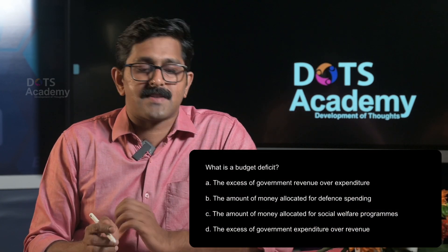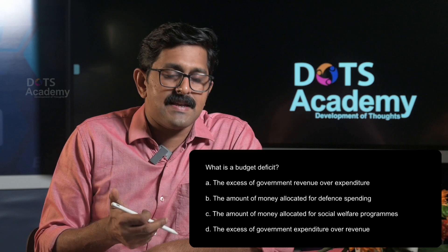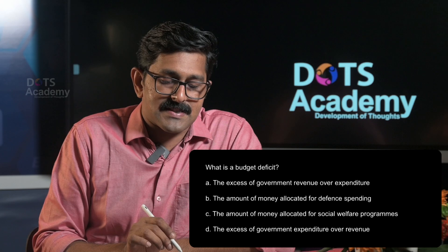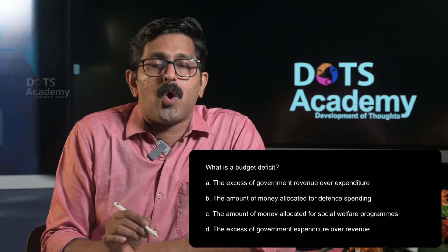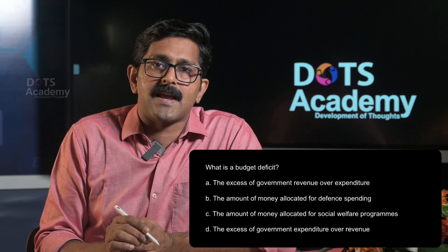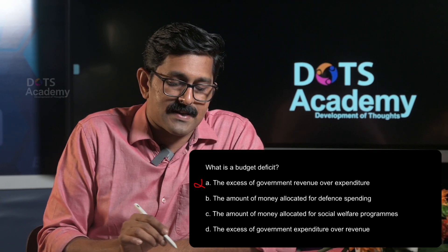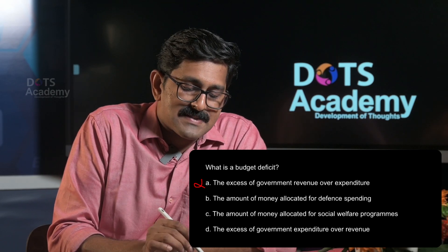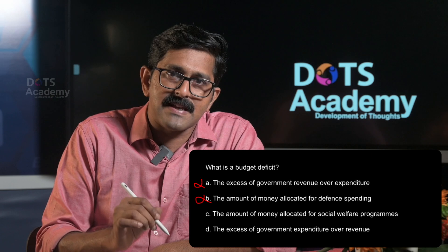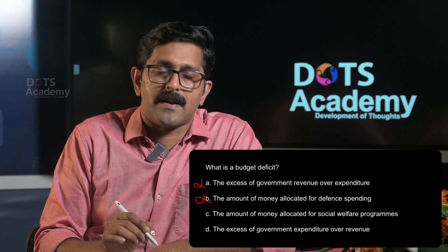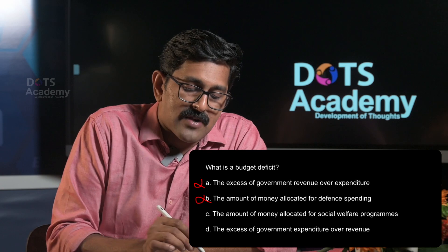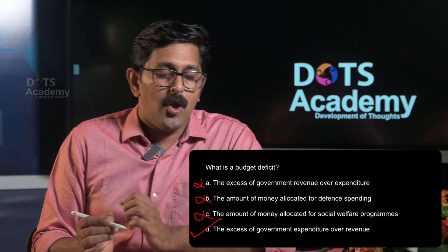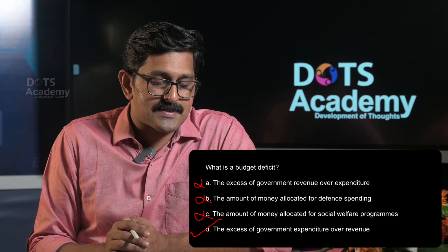What is a budget deficit? A deficit is when expenditure exceeds revenue. Option A is excess of government revenue over expenditure — that is not a deficit. Option B is the amount of money allocated for different spending — not a budget deficit. Option C is the amount allocated for social welfare programs — not a deficit. Option D is excess of government expenditure over revenue — that is the correct answer, option D.